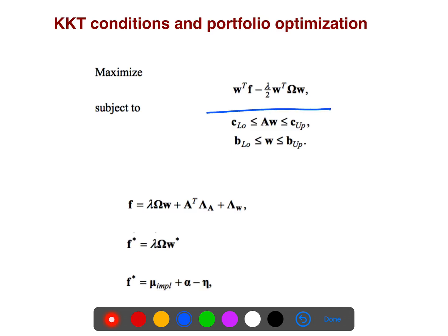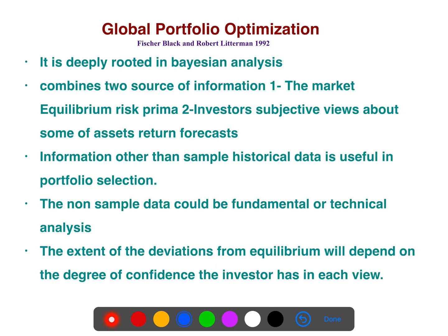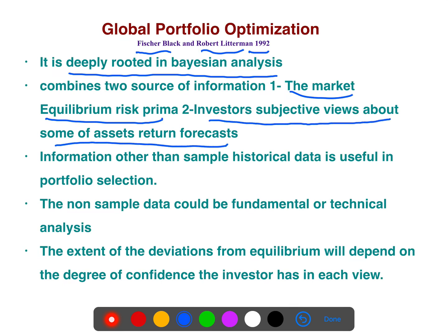Sometimes you have more sophisticated constraints, and that is why when you try to maximize the Lagrangian, KKT conditions are the more general constraints to add. In the original paper, Fisher Black and Robert Litterman did not even use the words Bayesian, posterior, or prior. But later, people wrote different articles and explained that it is exactly Bayesian analysis — deeply rooted in Bayesian analysis — combining two sources of information: market equilibrium used as prior information, and investors' subjective views. The posterior is very different from the prior because you add extra data.